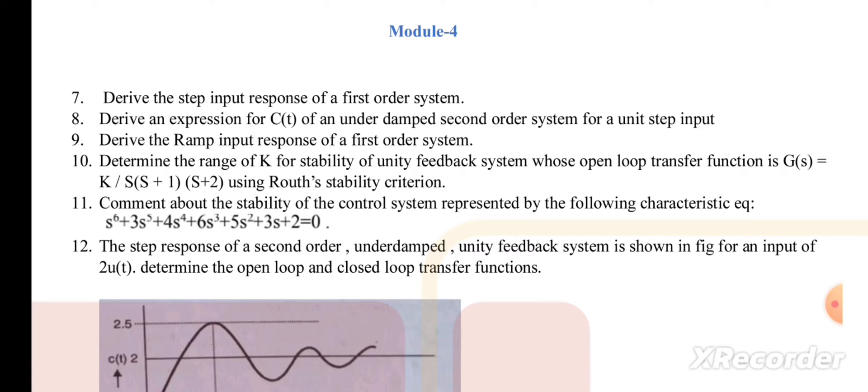And from module 4, derive the step input response of a first order system. Derive the expression for C(t) of an under-damped second order system for a unit step input. Derive the ramp input response of a first order system. Determine the range of K for stability of unity feedback system whose open loop transfer function is given here using Routh stability criteria.